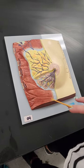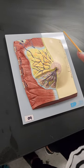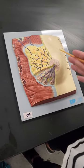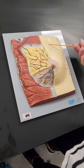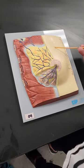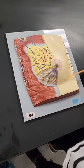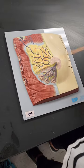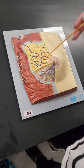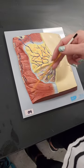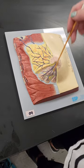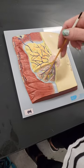On this mammary gland model, half of it is going to show you the external or superficial look — this is all of our skin. On the other side, we've removed the skin so that you can see the deep or internal structures.